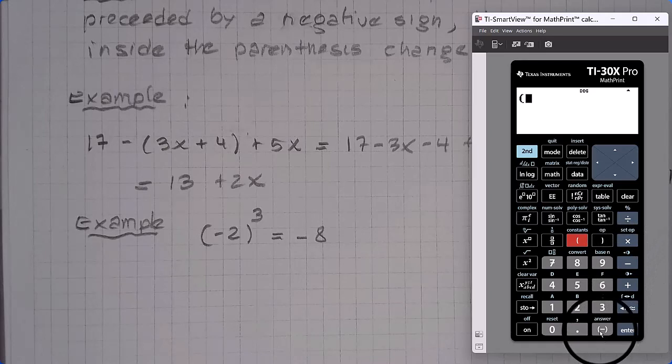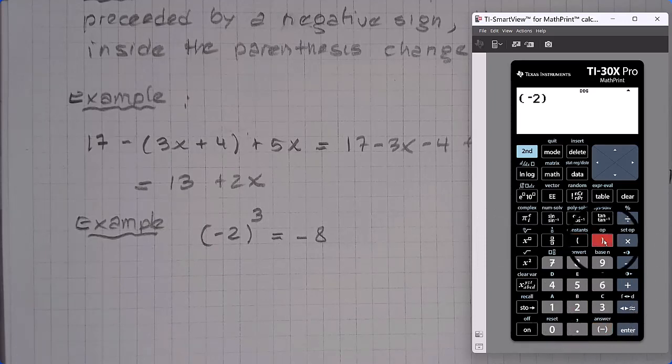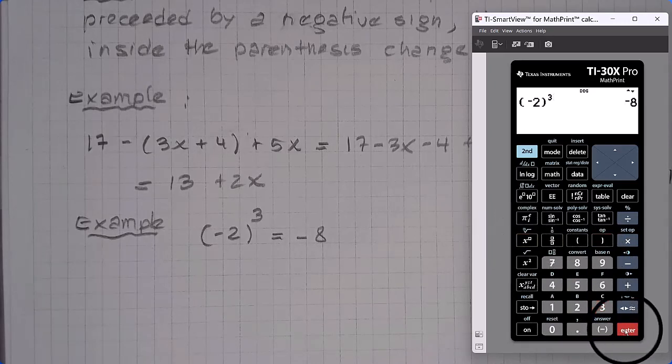So if I want to say negative 2, I'm not going to use this negative sign. I'm going to use this negative sign. Negative 2. Close parentheses. Raised to the third. And hit enter. And you get negative 8.